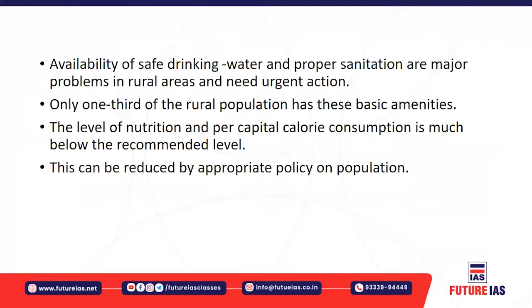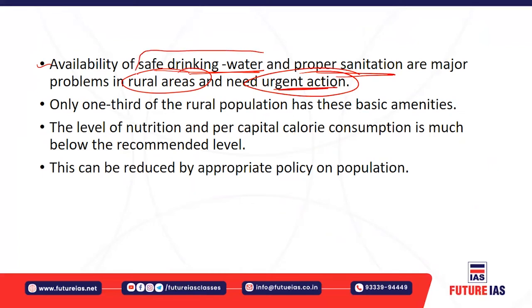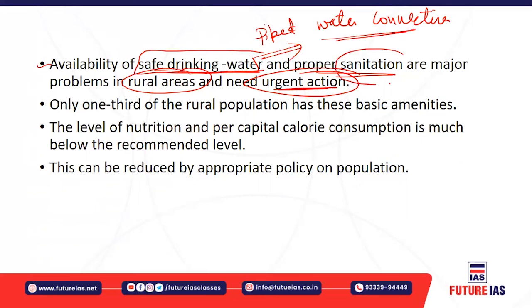The availability of safe drinking water and proper sanitation are major problems in rural areas requiring urgent action. Piped water connections are not available in every rural household, and proper sanitation facilities are also lacking — many people still go outside for daily needs. These facilities of drinking water and sanitation need to be urgently provided to rural areas.